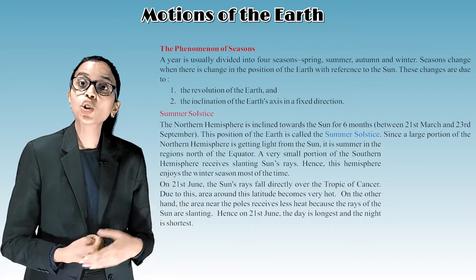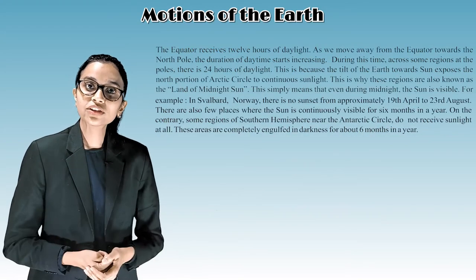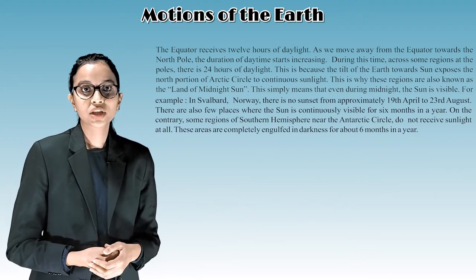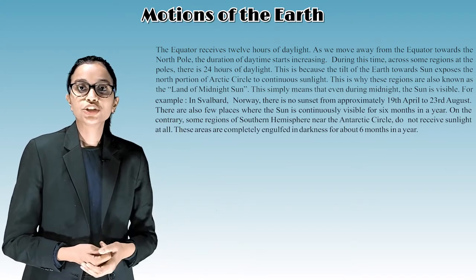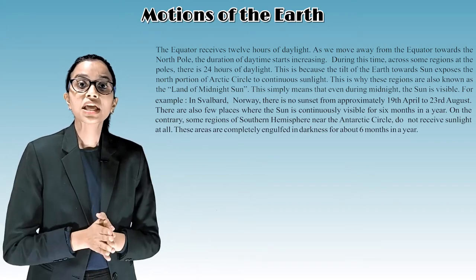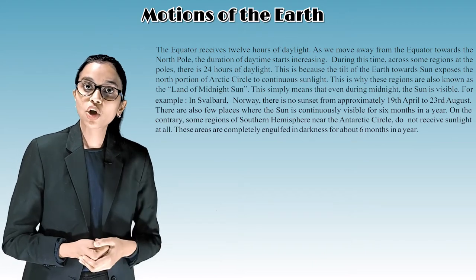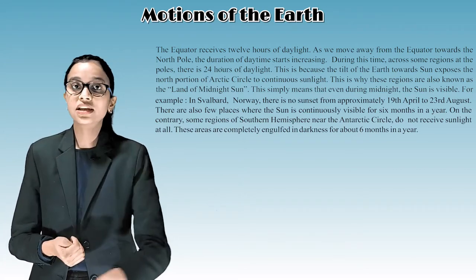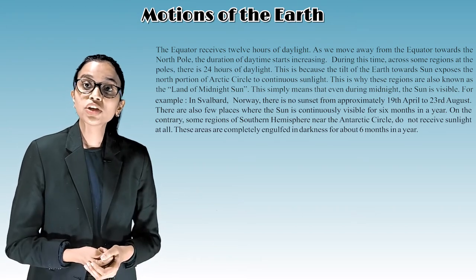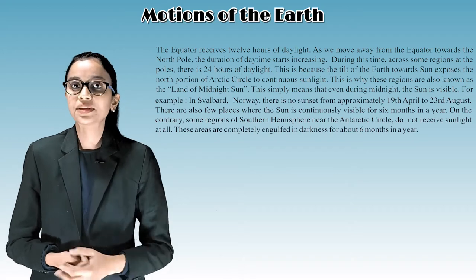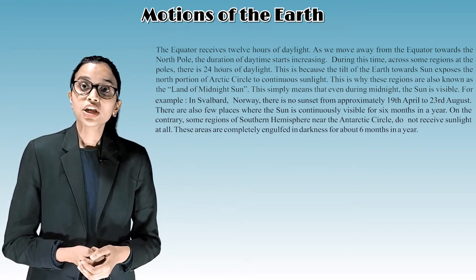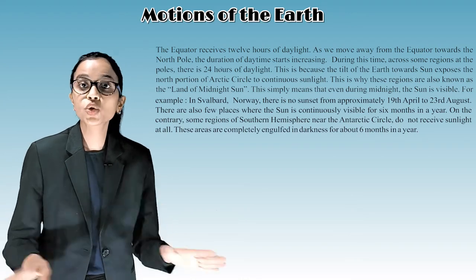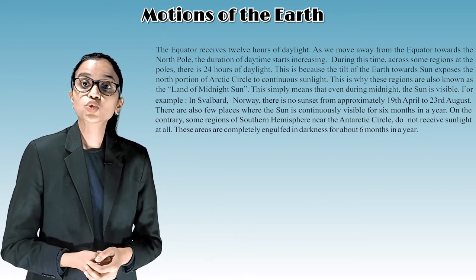On 21st June, the day is longest and the night is shortest. The equator receives 12 hours of daylight, and as we move away from the equator towards the north pole, the duration of daytime starts increasing. Across some regions at the poles, there is 24 hours of daylight because the tilt of the earth towards the sun exposes the north portion of the Arctic Circle to continuous sunlight. These regions are known as the land of midnight sun. For example, in Svalbard, Norway, there is no sunset from approximately 19th April to 23rd August.